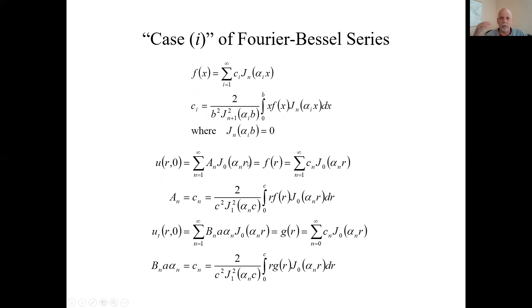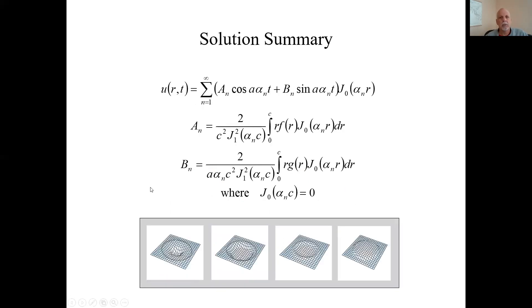Now we match coefficients like we usually do. This big A sub n has to equal these little c sub n. And the formula for the little c sub n's from over here. For the other condition, this big B sub n a alpha sub n, all that has to equal these little c sub n's. This is matching coefficients like we've done multiple times. And so here's the summary of it. Here's what we had before, but now we have ways to compute the big A's and the big B's. Got them from the Fourier-Bessel series.